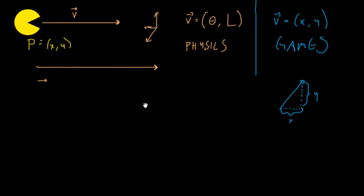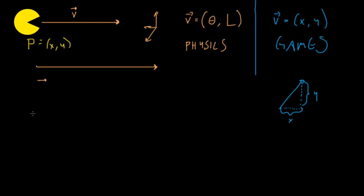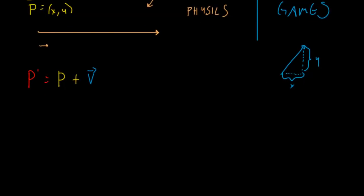So here's the formula we're going to use. Don't get scared by the word formula. It's really simple. Pac-Man's new position, every time we update his position, his new position P-prime means that it's different from P, it's a new P. It's just going to be his old position. Pac-Man's new position P-prime equals Pac-Man's old position plus the velocity. That's it. That's all it is.